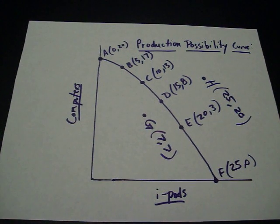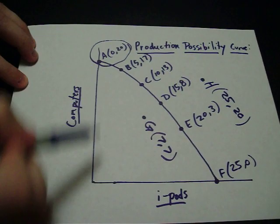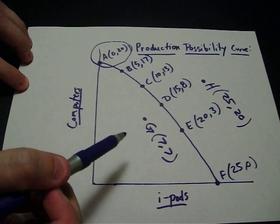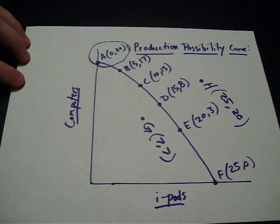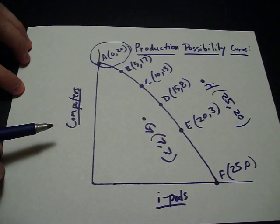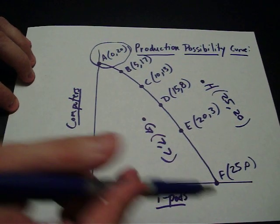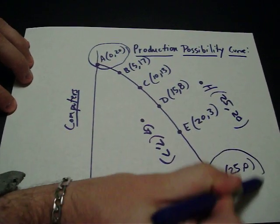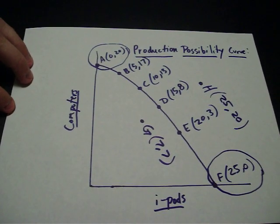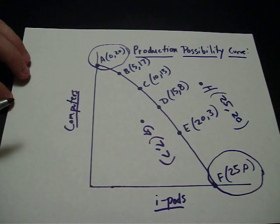Also other key points, point A where they're producing no iPods but 20 computers. That point they'd be specializing in making computers because they're only making that one product. Point F over here they're making 25 iPods and nothing else, that would be specialization in the production of iPods.